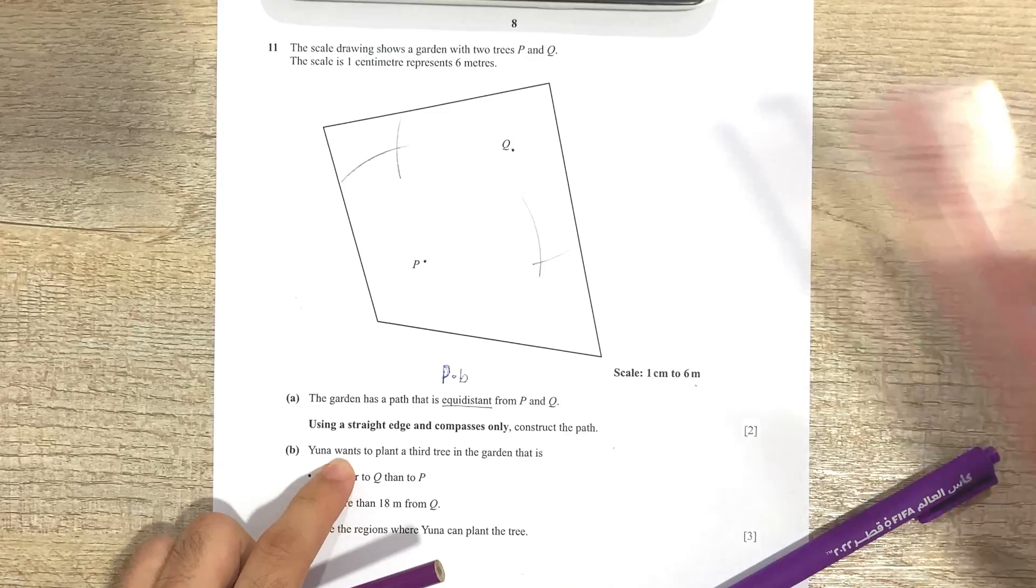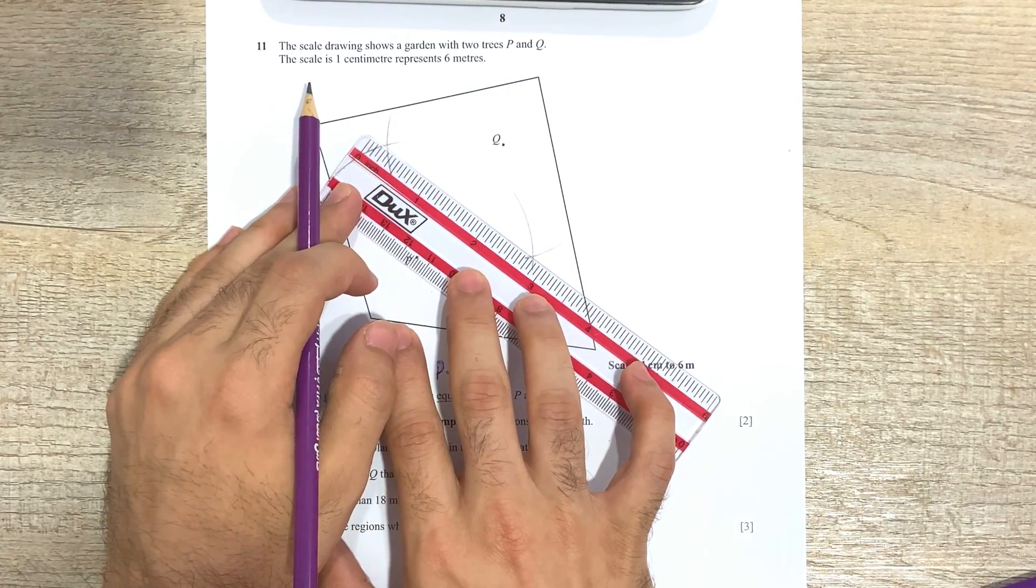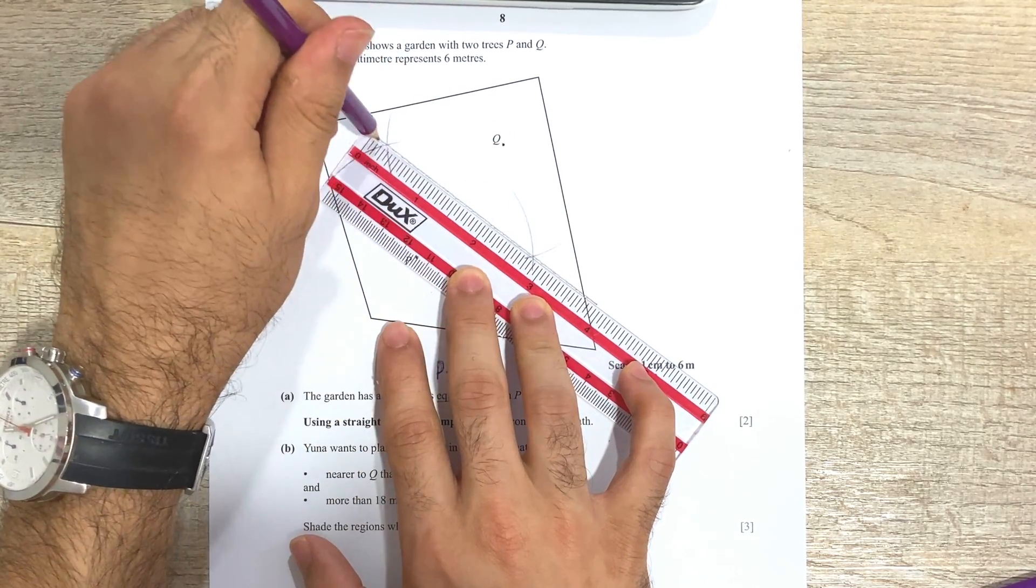Okay, so once you've done that, then what you do is you pick up your scale, you join the two points where the arcs are intersecting, like I am about to do. So we have it over here.